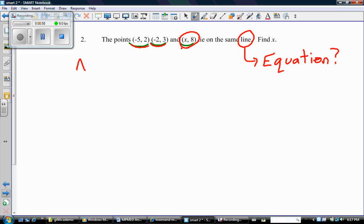Let's say I have point A at (-5, 2) and I have point B at (-2, 3). That's all the information I need to find the equation of the line through those two points. So that's what we're going to do.